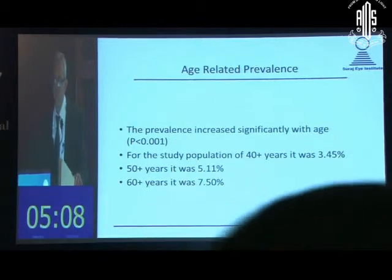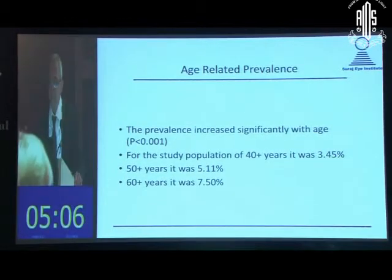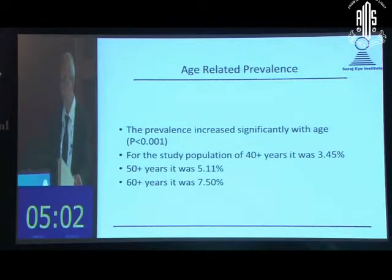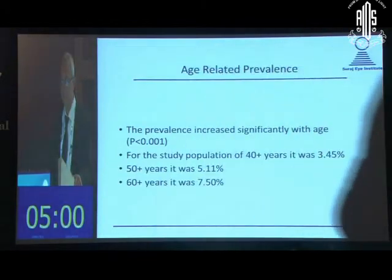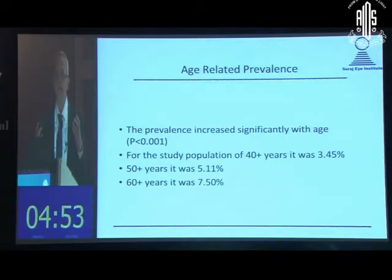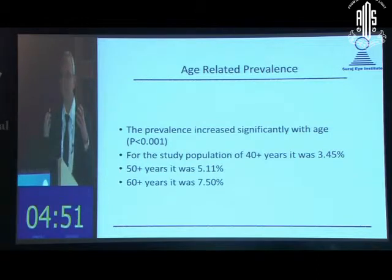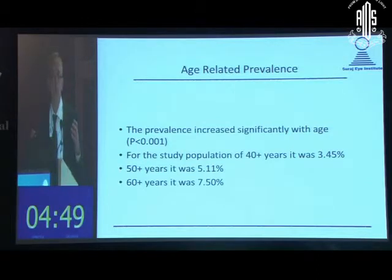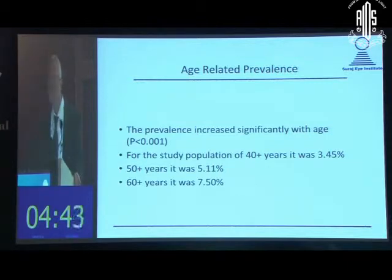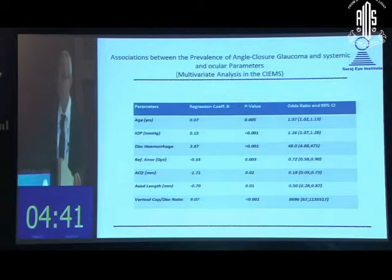The prevalence increased significantly with age, starting from 3.45 percent for those aged 40 and above and reaching 7.50 percent for those aged 60 and above. To illustrate the public health impact: if everyone in a room like this were 60 years or older, almost 1 in 10 would have glaucoma or be strongly suspected of it. That highlights the importance of knowing age-related prevalence figures.